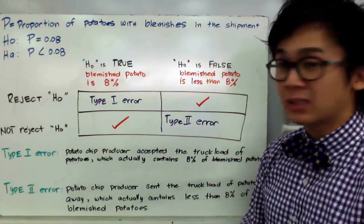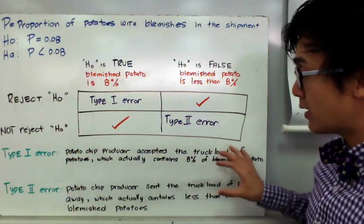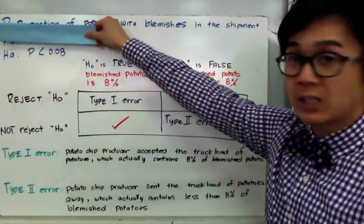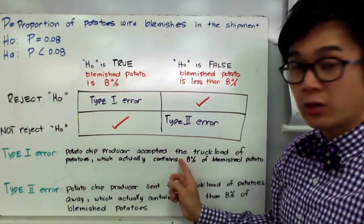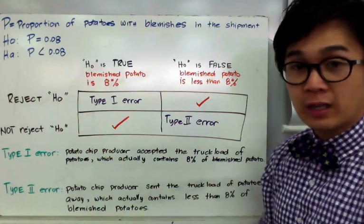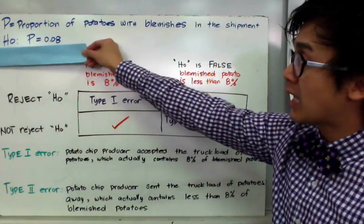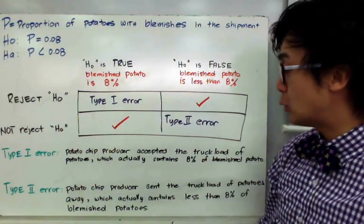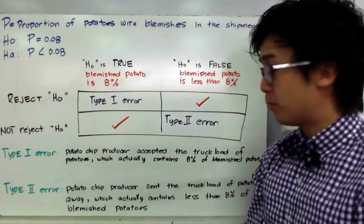It might seem a bit vague, but it makes more sense in context. For the type 1 error, rejecting the null hypothesis even if it's true means the potato chip producer accepted a truckload that actually contains 8% blemished potatoes. For the type 2 error, not rejecting the null hypothesis even if it's false means the producer sent away a truckload that actually contained less than 8% blemished potatoes.